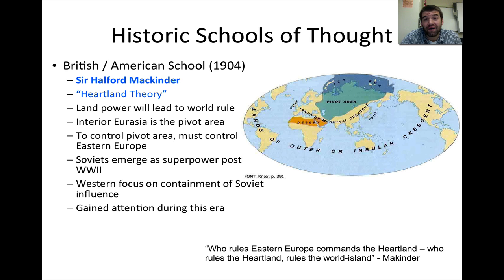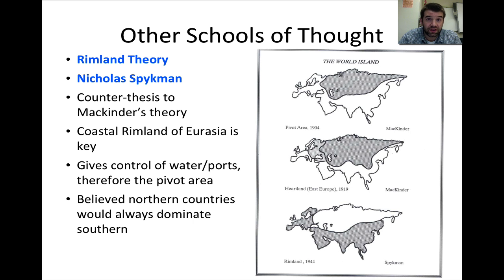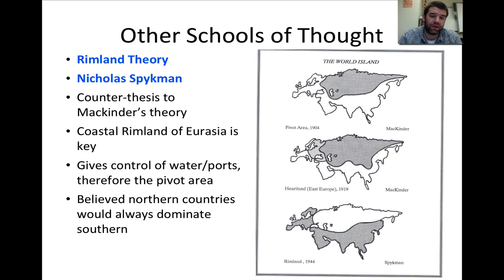Much of the latter half of the 20th century saw this theory appear consistent with the rise of the Soviet Union. Even though there were competing global powers in the West, the Soviet Union's growth in size, influence, and expansion into Eastern Europe and parts of Southeast Asia supported that theory. A school of thought in direct opposition was the Rimland Theory, presented by Nicholas Spikeman, which flips Mackinder's ideas — focusing on control of ports and sea access, arguing that cutting off the heartland from waterways would make it the weakest point.